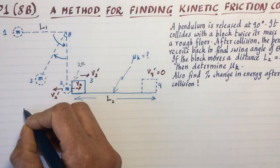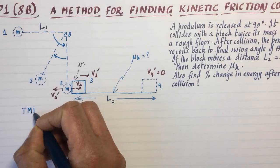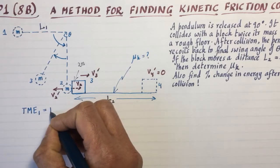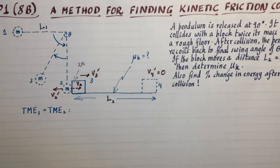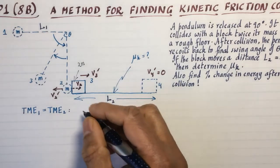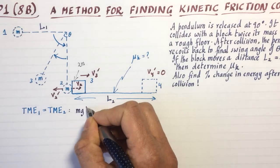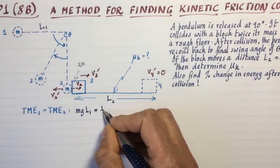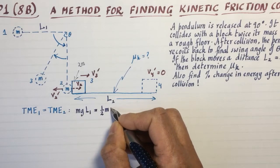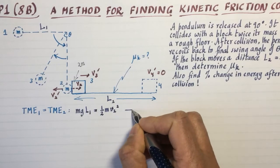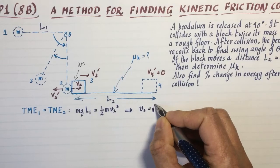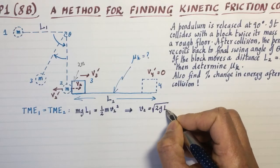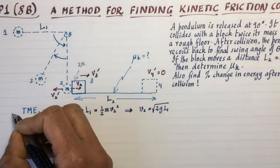So mechanical energy is certainly conserved when the pendulum swings down. So I'll write TME at one must be equal to the total mechanical energy at this position two, just before impact. Well, the equation for that is written as follows. The potential energy lost is just mgL1. And that will be equal to the kinetic energy gained, which is one half m V2 squared. Canceling out the m's and multiplying by two and taking the square root, I immediately get that V2 is the square root of 2gL1. Okay, that's phase one of the problem.